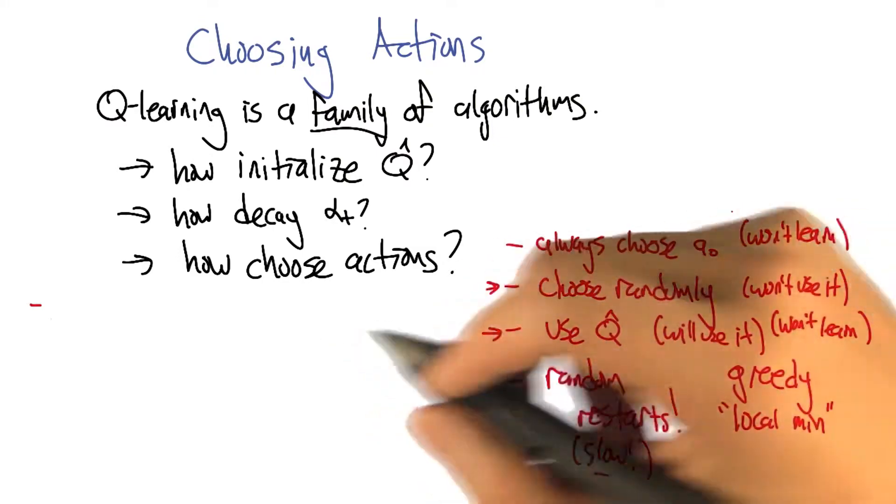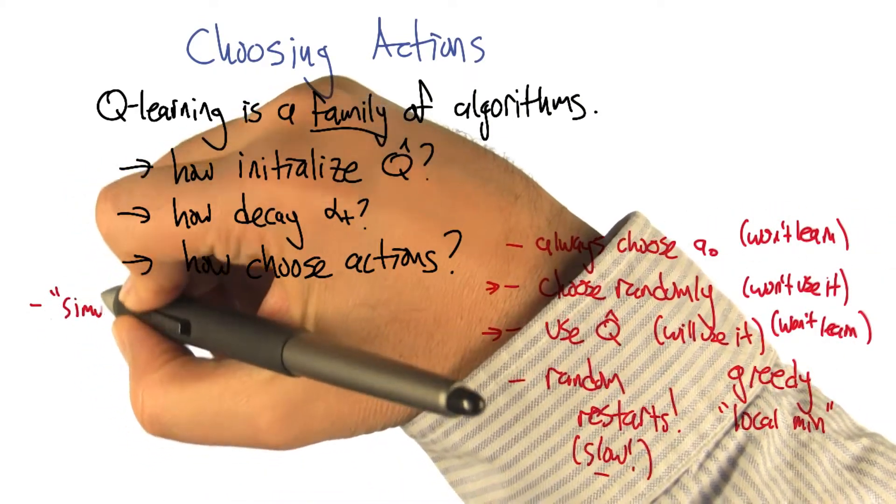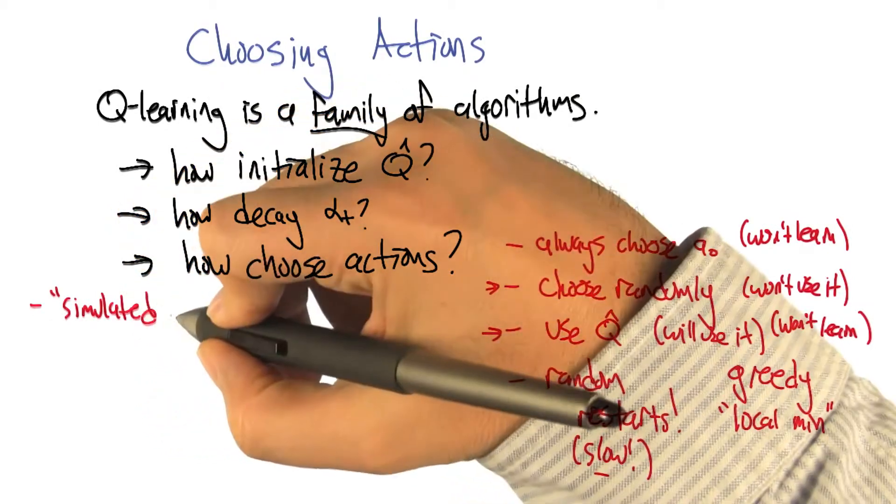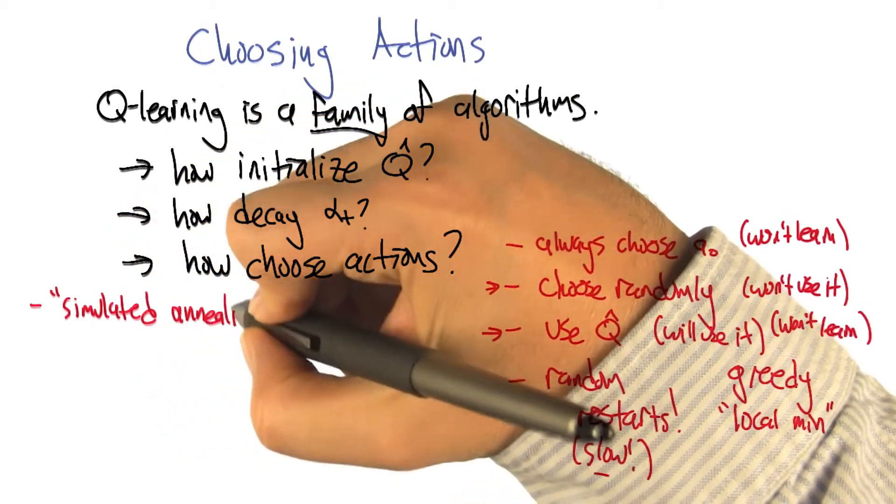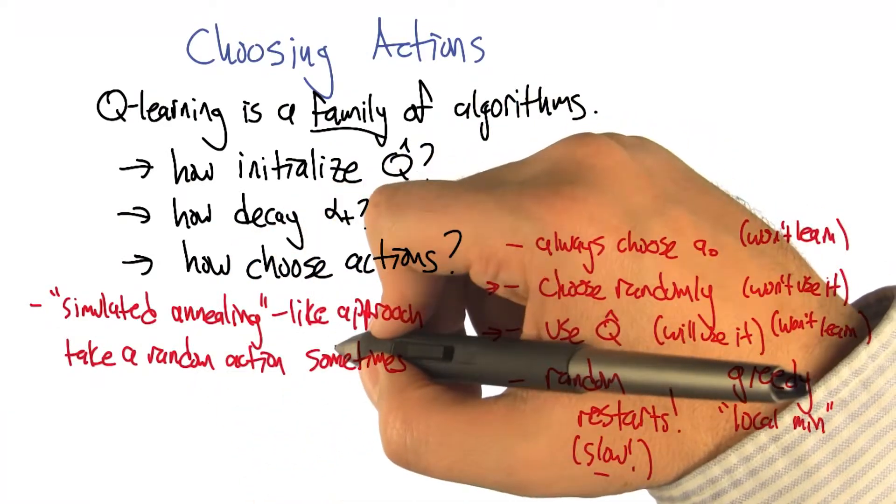So then the random restarts thing kind of works if instead of it being a random restart, it's just a random action every once in a while. Yeah. Excellent. Alright. So simulated annealing like approach says that we're going to take a random action, you know, sometimes.